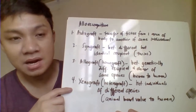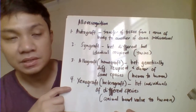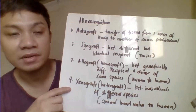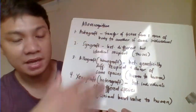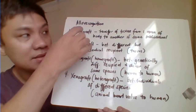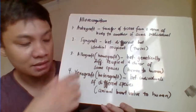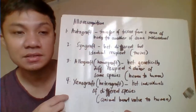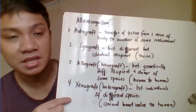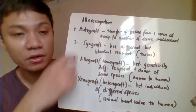In terms of immunogenicity and degree of foreignness, the autograft is least foreign, while the xenograft is most foreign and therefore has the highest chance of rejection.